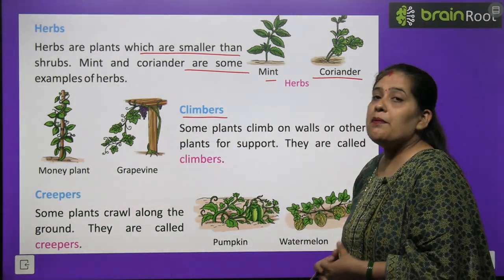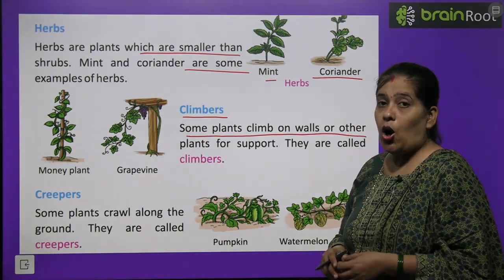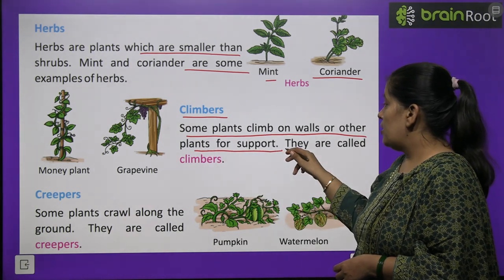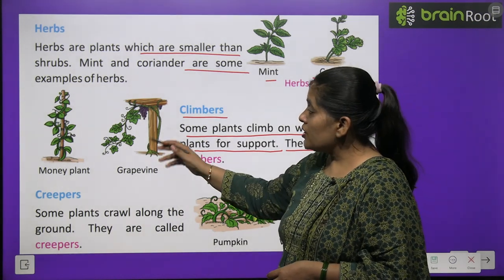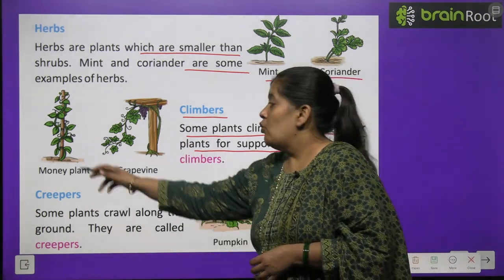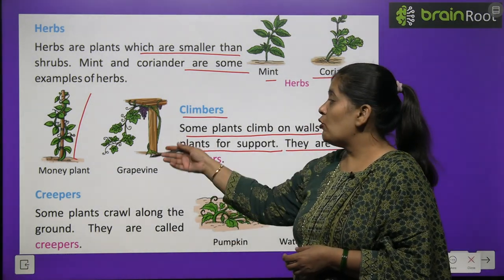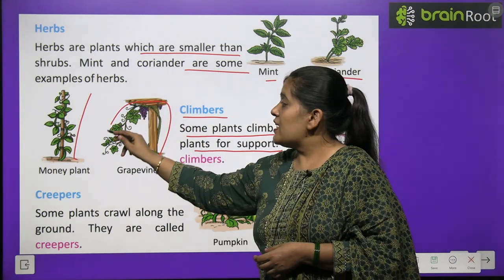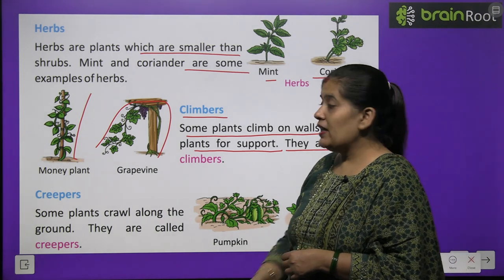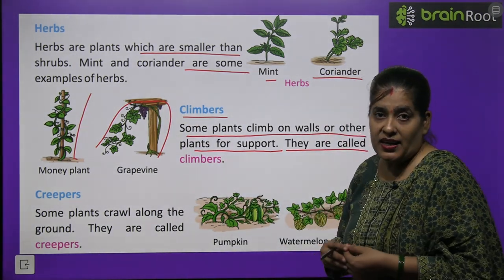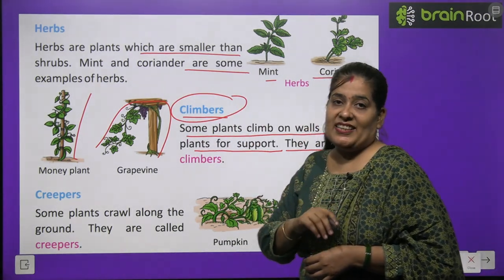Now climbers. Climbers क्या होते हैं? Some plants climb on a wall or other plants for support. They are called climbers. कुछ ऐसे पौधे जो दूसरे पौधों का सहारा लेकर ऊपर की ओर बढ़ते हैं या दीवारों पर चढ़ते हैं — जैसे अंगूर की बेल और money plant — इन्हें ऊपर बढ़ने के लिए किसी सहारे की जरूरत होती है। तो ऐसे पौधों को हम climbers कहते हैं।